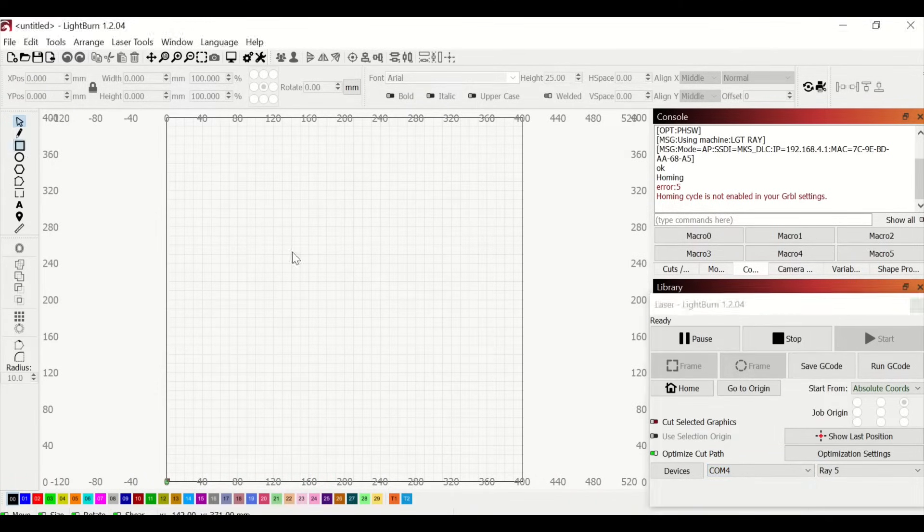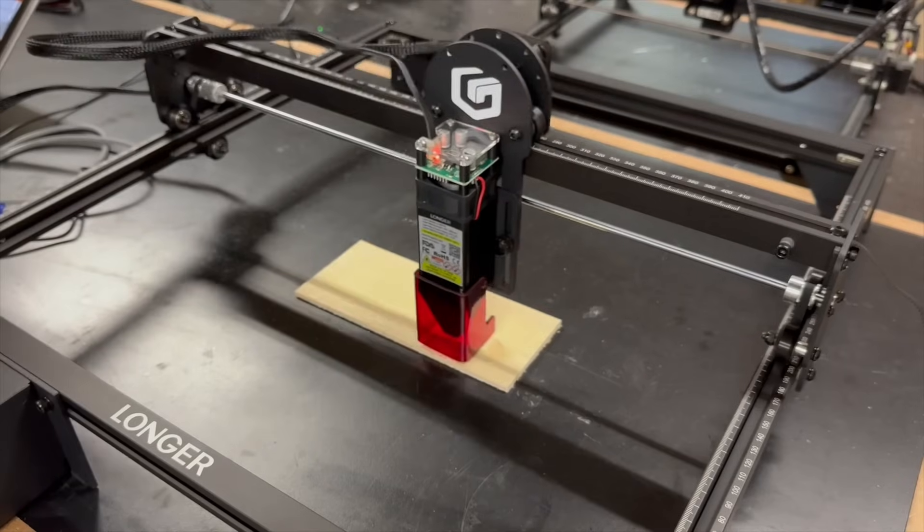The laser appeared to be connected so I drew a simple shape to test that out. I clicked frame so I could see where the cut area would be. The Ray 5 was indeed connected.